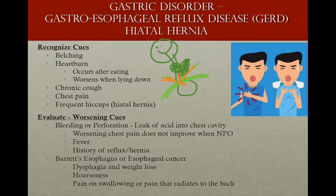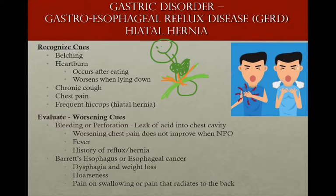Worsening cues include bleeding or perforation, which is rare. Perforation means the esophagus has eroded and stomach acid spills into the thoracic cavity, damaging surrounding structures including potentially the heart muscle. If you have worsening chest pain that doesn't improve even when NPO, acid may have refluxed into the thoracic cavity. You can also get fever from inflammation of the lungs and heart with perforation.